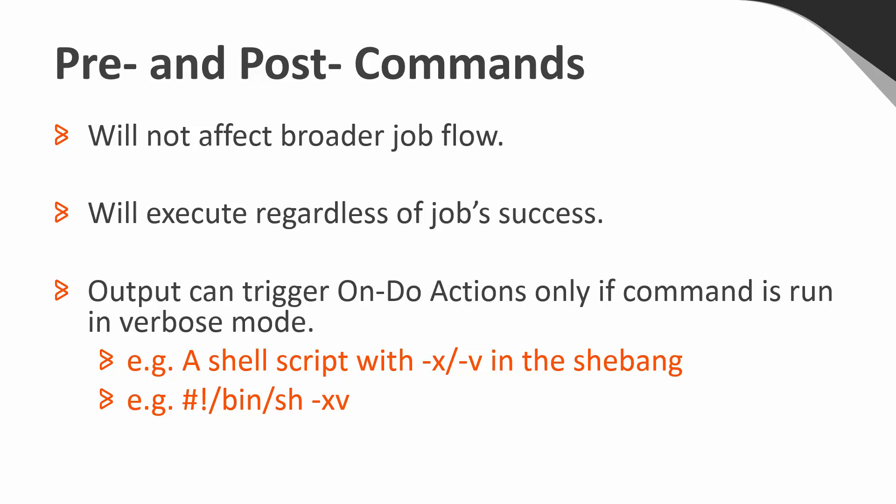The output generated from these commands can be used to trigger undo actions, but only if the command is run in verbose mode, otherwise its output will not be recognized in the job output. An example of this is setting verbose mode in a Linux command shell script by putting -xv into the shebang at the beginning of the script to allow collection of the command's standard output.